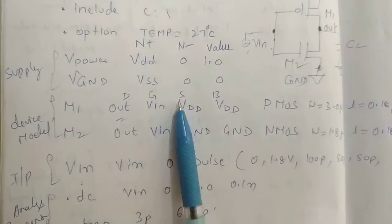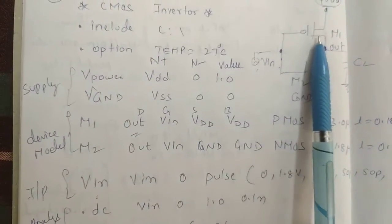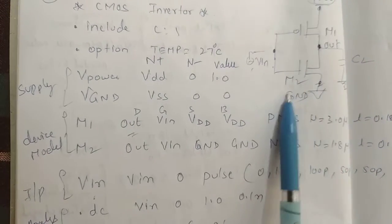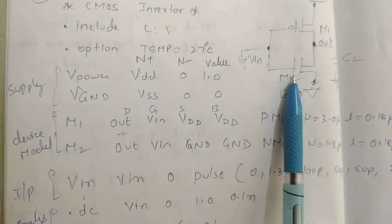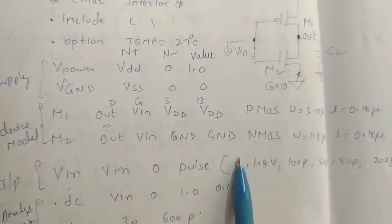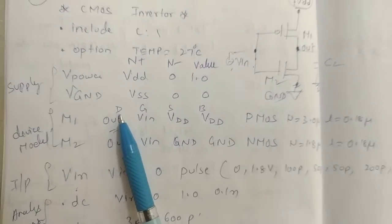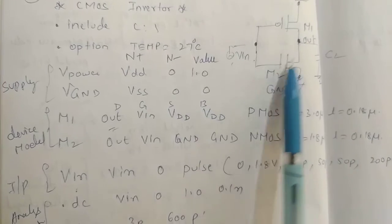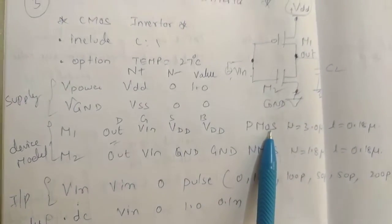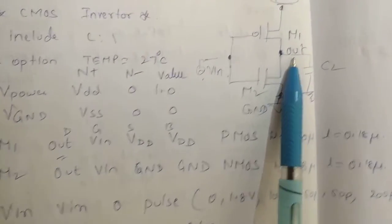Next, these are the devices, that is your transistor M1 M2. So M1 is PMOS, M2 is NMOS. You have to write like this: PMOS, NMOS. This is how you see: this is drain, source, and bulk.